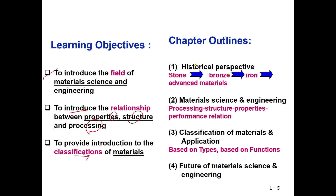Because of these three learning objectives, the chapter outlines are as follows: first, the historical background of material science; second, material science and engineering in terms of processing, structure, properties, and performance relations; third, the classification of materials and their applications based on types and functions; and lastly, the future of material science and engineering, to include advancements in the field.